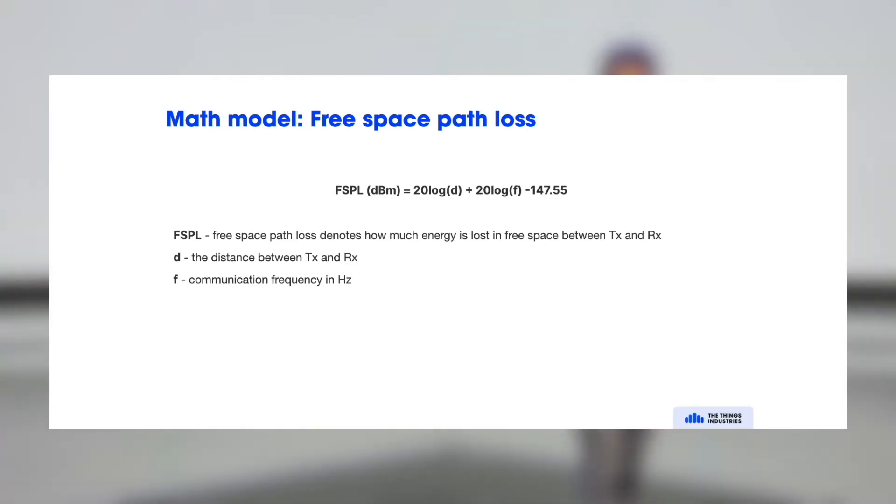So the free space path loss is this formula, and it takes into account the distance between the transceiver and the receiver end, as well as the frequency.